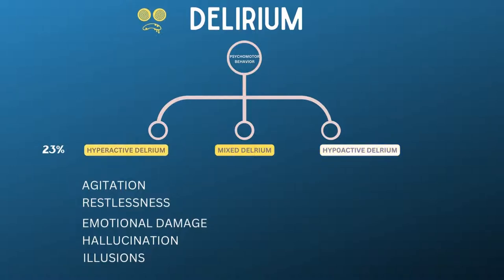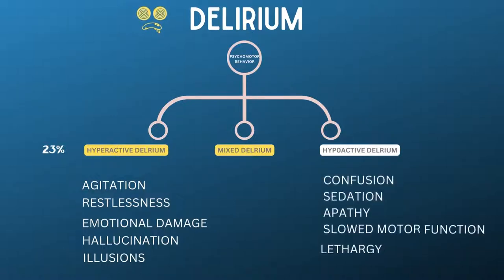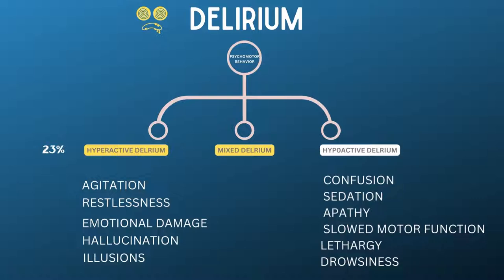Next, hypoactive delirium. A typical characteristic of hypoactive delirium is confusion, sedation, apathy, slowed motor function, withdrawal, lethargy, and drowsiness. Hypoactive delirium is often underrated and is associated with a worse prognosis, as patients with hypoactive delirium showed higher six-month mortality rates than those with other subtypes of delirium.